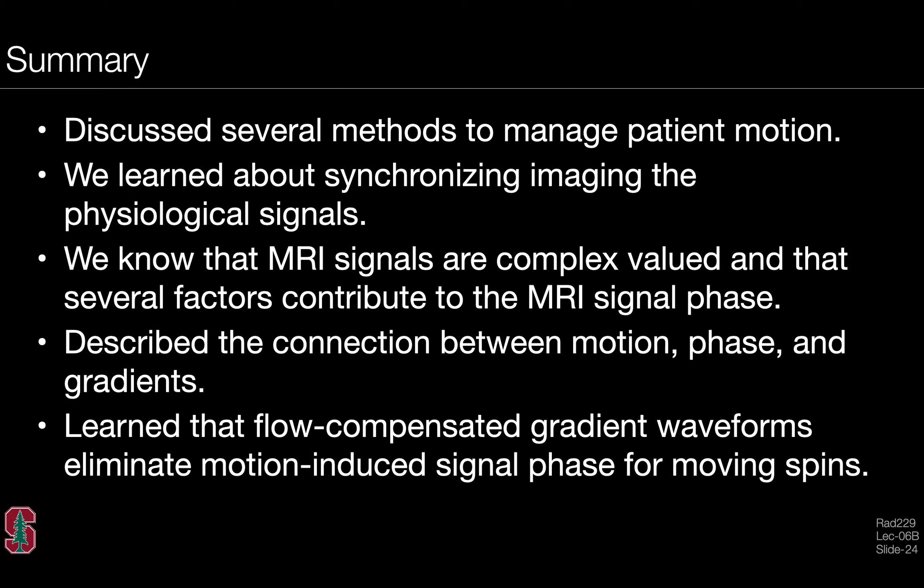In summary, we discussed several methods to manage patient motion and learned about synchronizing the imaging to physiological signals. We know now that the MRI signals are complex valued and that several factors contribute to the MRI signal phase. We described the connection between motion, phase, and gradients — linking how phase can be corrupted and lead to motion artifacts, but also how it might be utilized. We learned that flow compensated gradient waveforms can eliminate motion-induced signal phase for moving spins, as seen in both the cartoon example and the in vivo example.